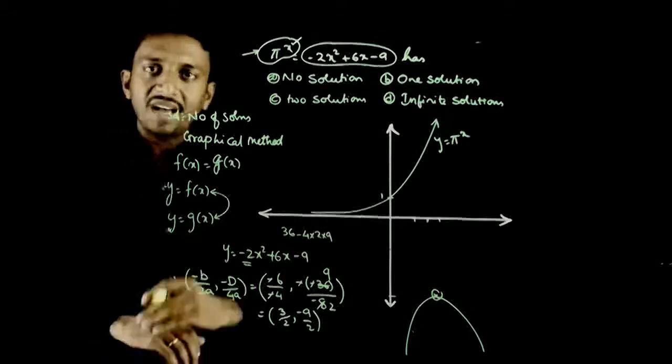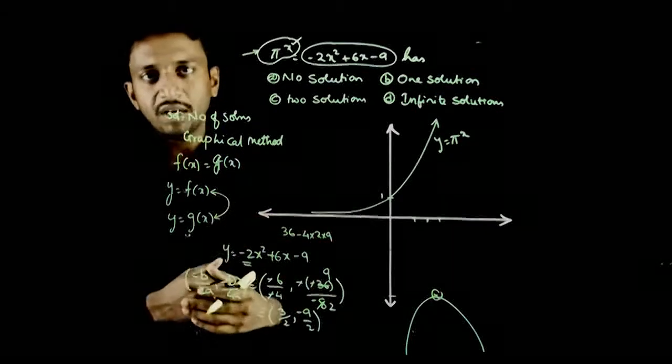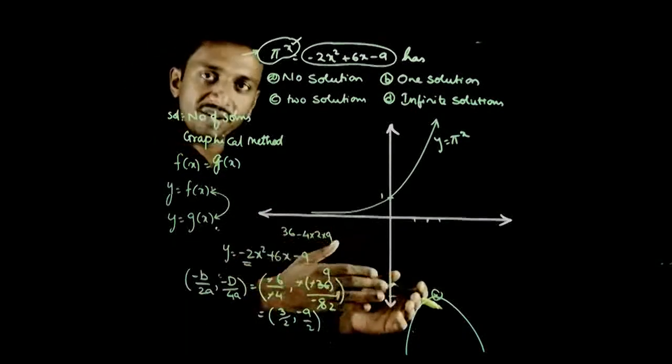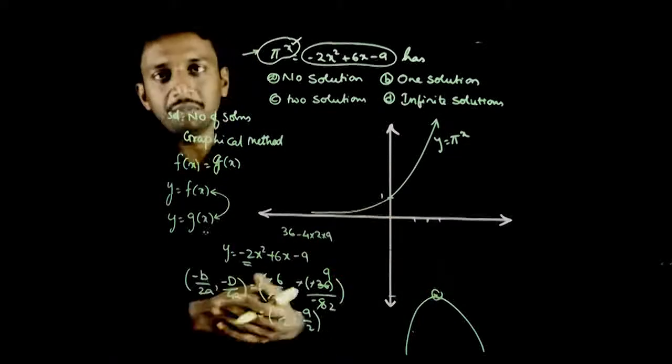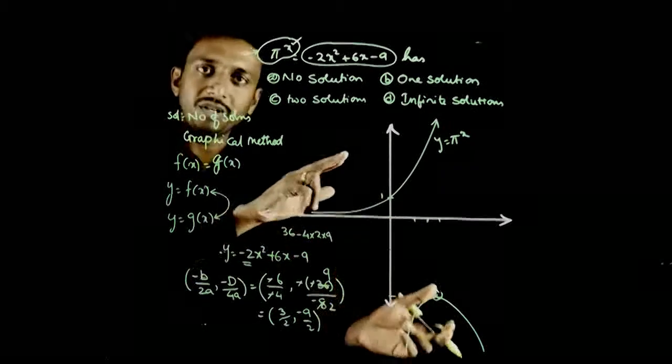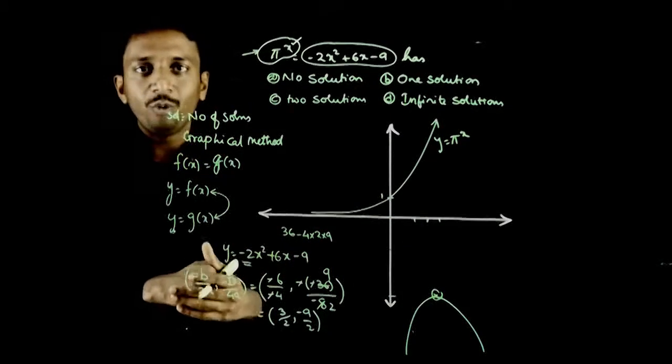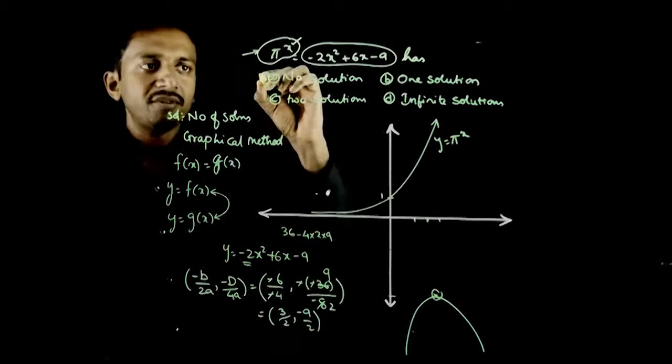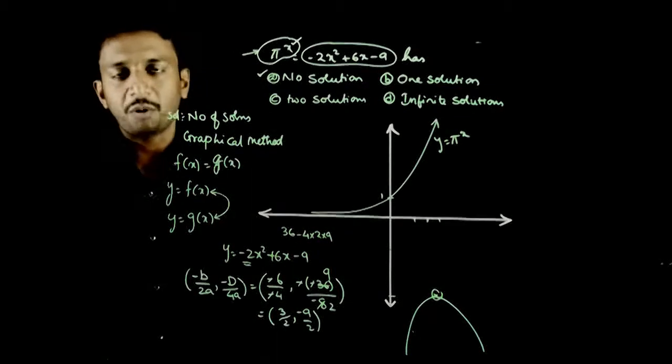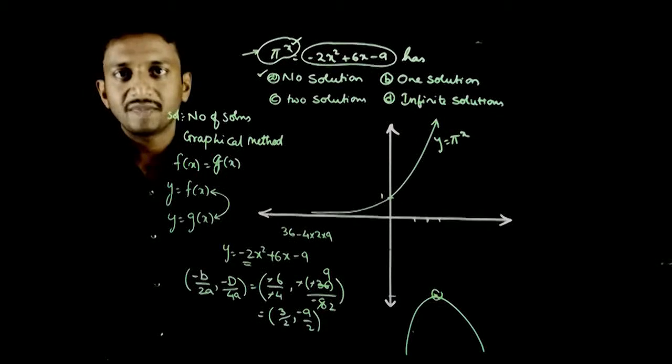So f(x) graph is here, completely on the positive side of x-axis. g(x) graph is completely below x-axis. So how many points of intersection are there? No points of intersection. Hence you have no solution as the answer. So option A is the right answer. Thank you.